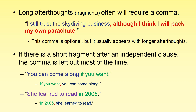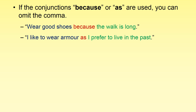There are a couple of conjunctions that sometimes cause problems for students: 'because' and 'as.' Generally speaking — there are exceptions, but you'll probably never worry about them — because and as do not take a comma. These conjunctions join independent clauses and need no punctuation. For example: 'Wear good shoes because the walk is long.' 'I like to wear armor as I prefer to live in the past.' These are perfectly fine with no punctuation.